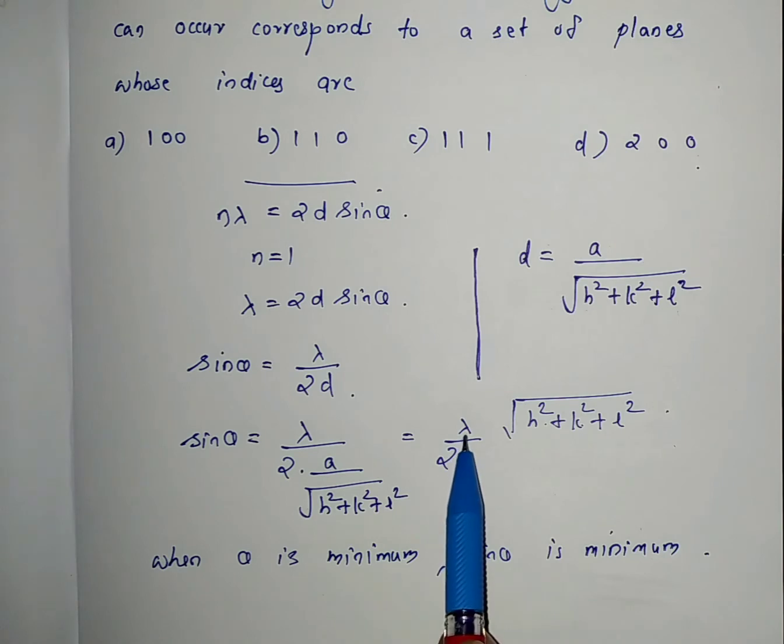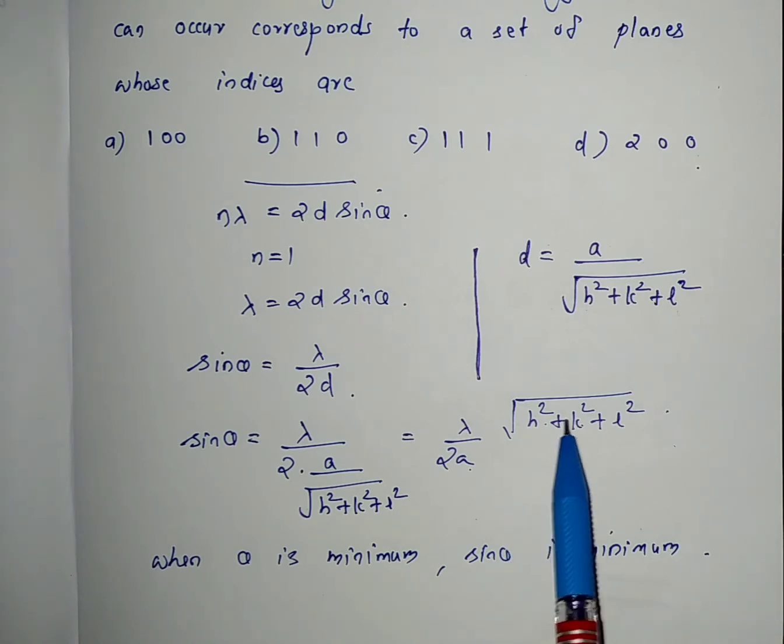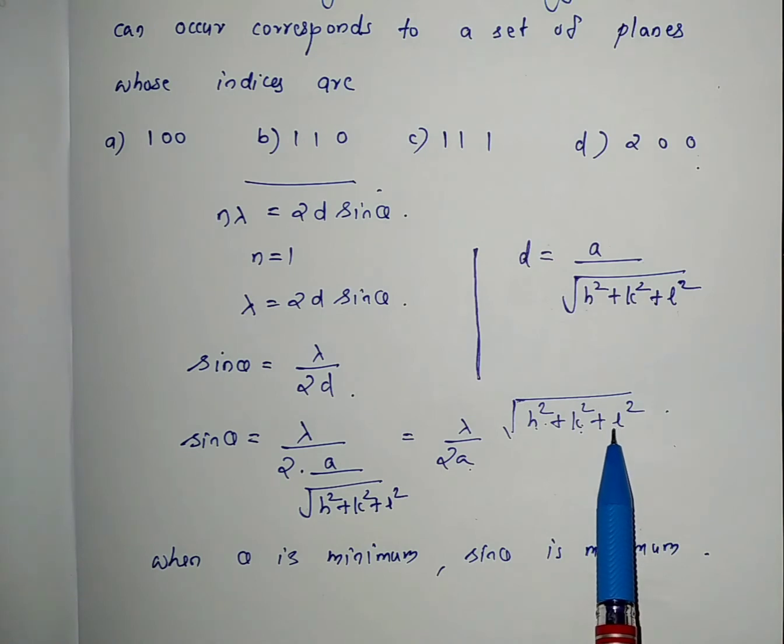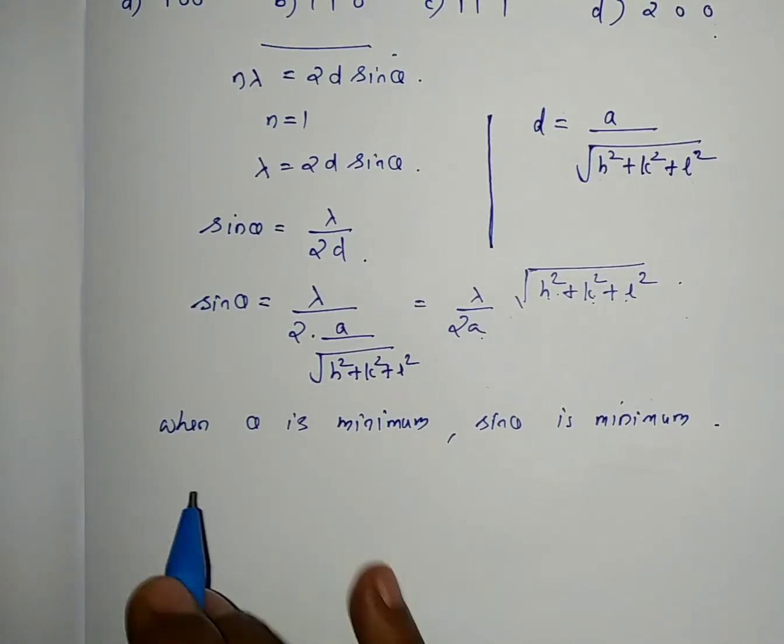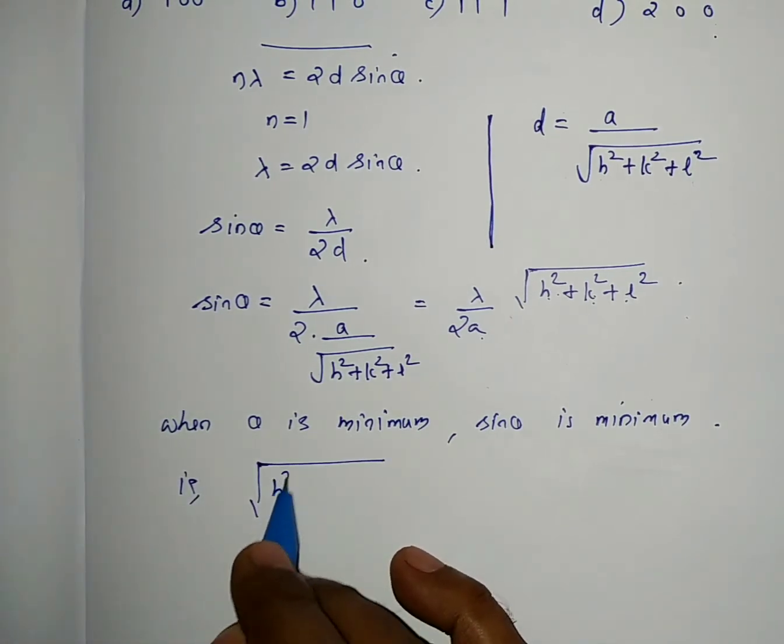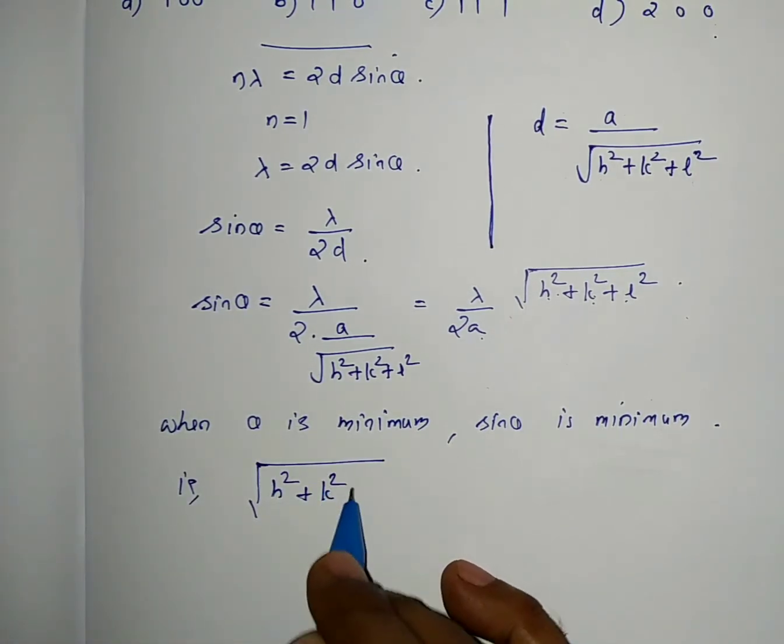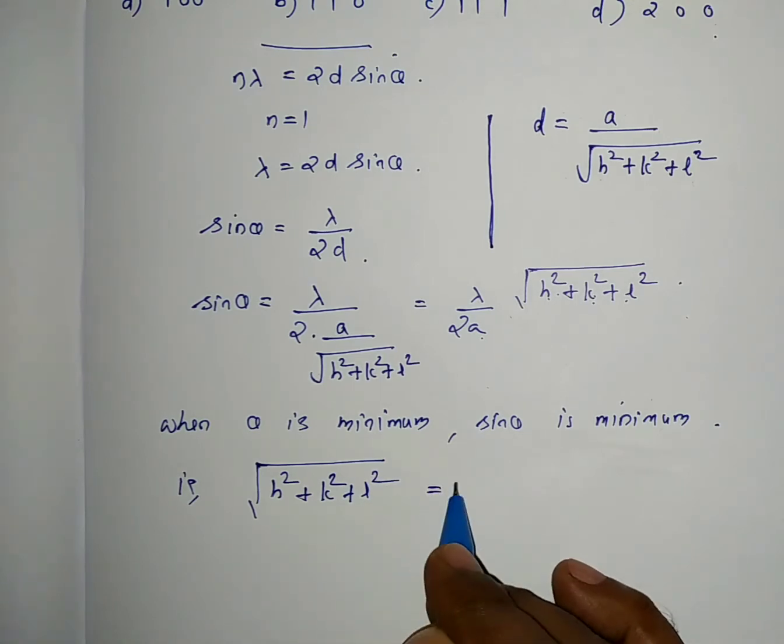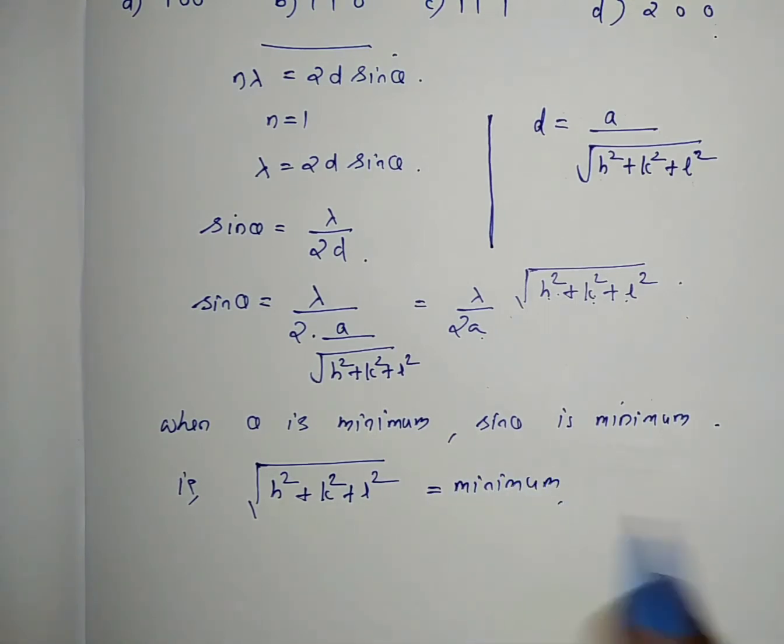For a particular wavelength, λ and a are constants. Therefore, when sin θ is minimum, the square root of h² plus k² plus l² has to be minimum.